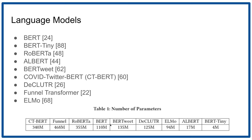Then in the middle, we have BERT, BERTweet, DeCLUTR, and ELMo, with 94 million to 135 million parameters. And finally there are two smaller models — ALBERT with 17 million parameters, and BERT-Tiny with 4 million.